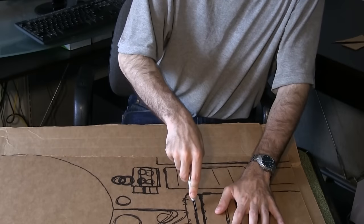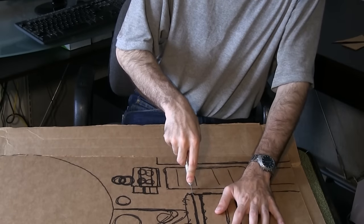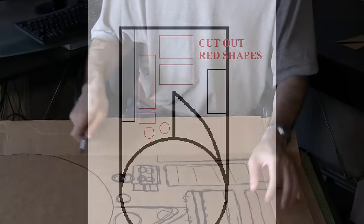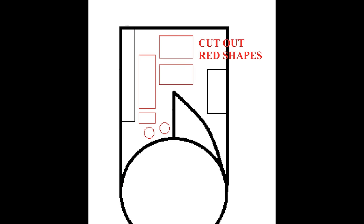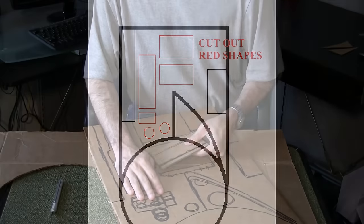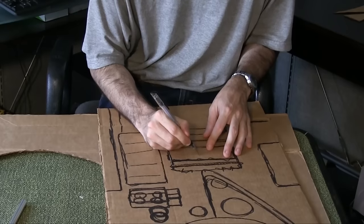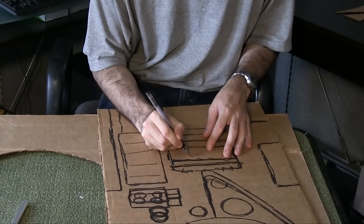Use an exacto blade to cut out these sections. Remember to exercise caution when using an exacto blade. Cut each section as one piece and be sure to mark where it goes. These will be serving as templates.